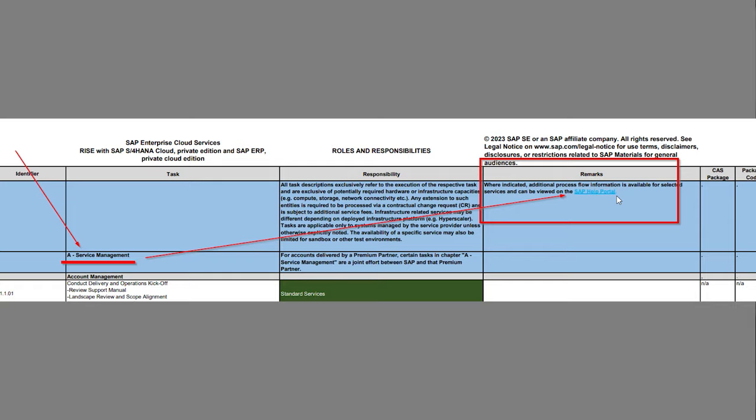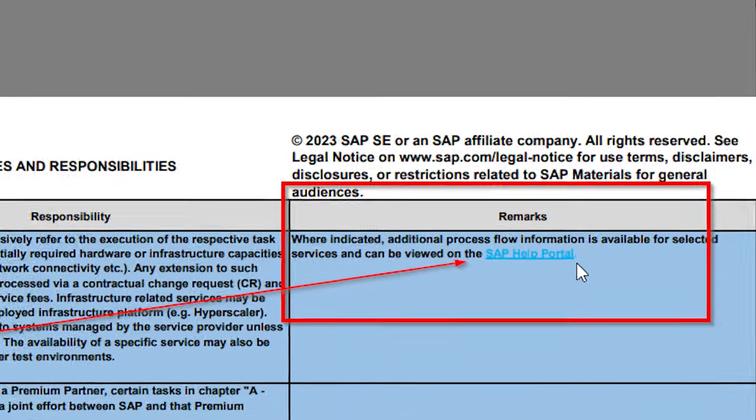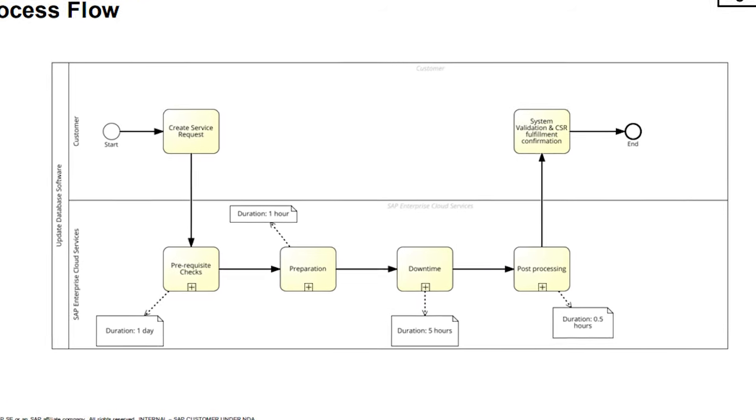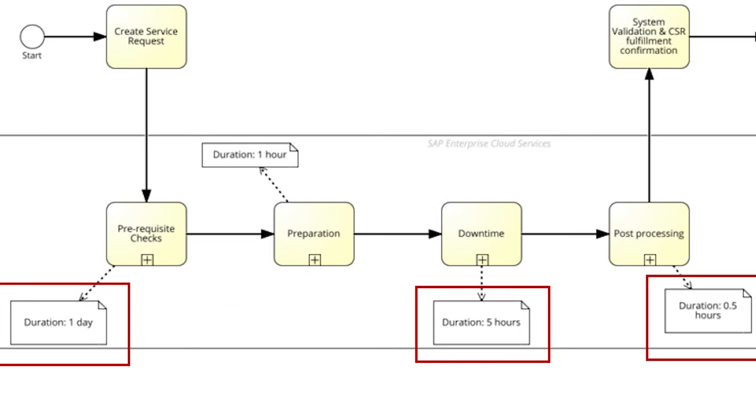At the very top of the roles and responsibilities document is a useful link to help.sap.com and a document that contains process flows for different processes. There are flows for common tasks such as SAP kernel update, update database software, etc., though not flows for every task. In the document there are some proposed service times, but these are caveated as usual. Here's the update database software process flow at a high level. What do you think about those time durations? Let me know in the comments below.